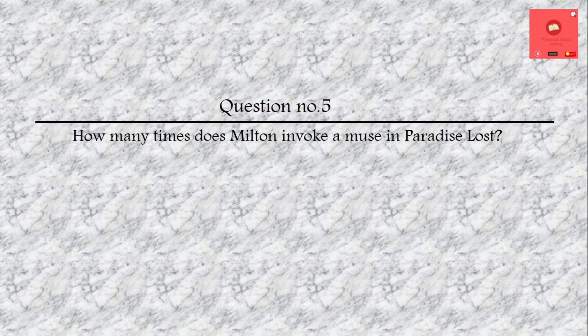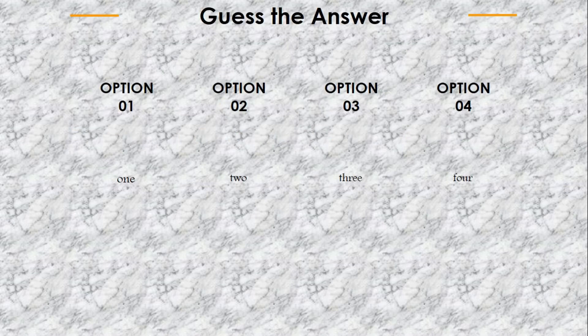Question number 5: How many times does Milton invoke a muse in Paradise Lost? Options are: one time, two times, three times, or four times. The answer is three times.